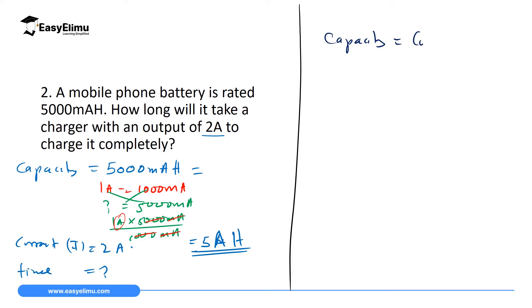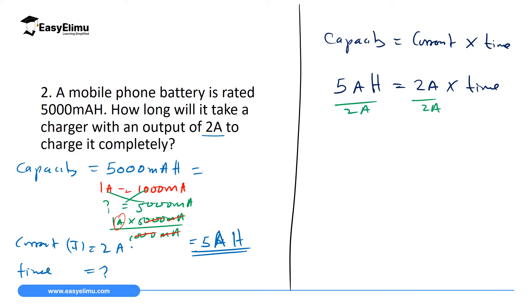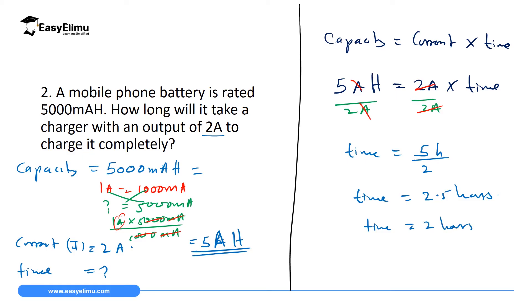Using Capacity = I × t: 5 Ah = 2 A × t. Dividing both sides by 2 ampere — amperes cancel — we get t = 5 ÷ 2 = 2.5 hours, which is 2 hours and 30 minutes. So when you connect this phone at zero charge, it will display approximately 2 hours and 30 minutes until full.